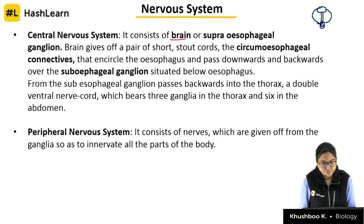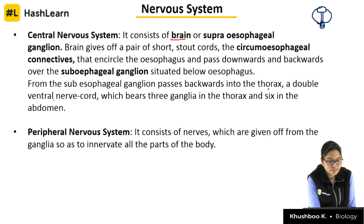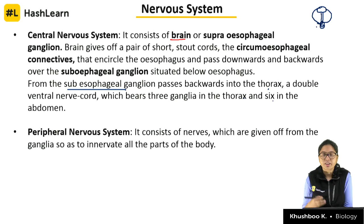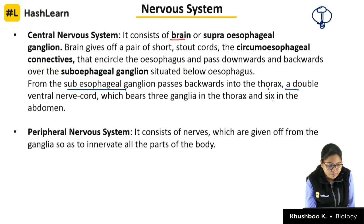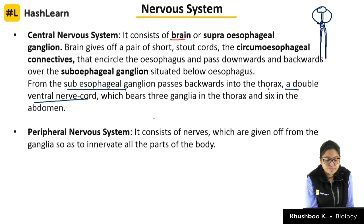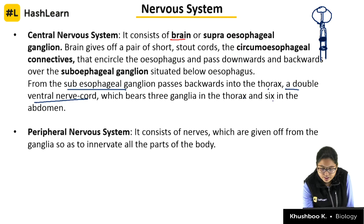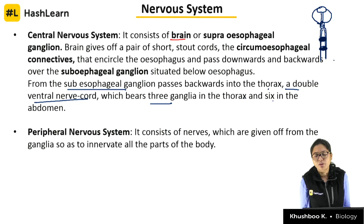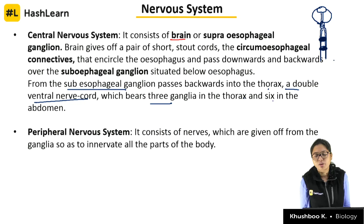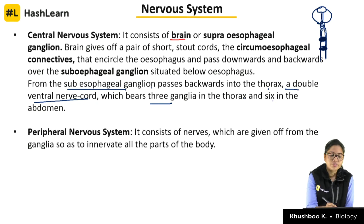From the subesophageal ganglion, a double ventral nerve cord passes backward into the thorax bearing 3 ganglia in the thorax and 6 in the abdomen, giving a total of 9 ganglia in the thorax and abdomen. Together, all of these form the central nervous system of the cockroach. The nerve cord is double and runs parallel, joining at points to form the ganglia.